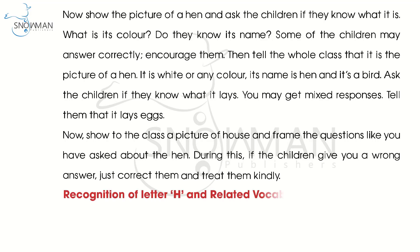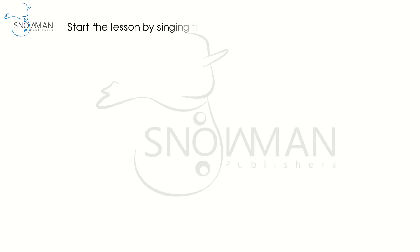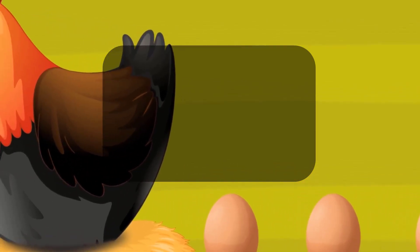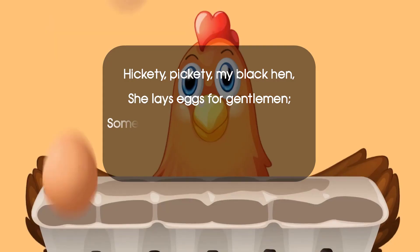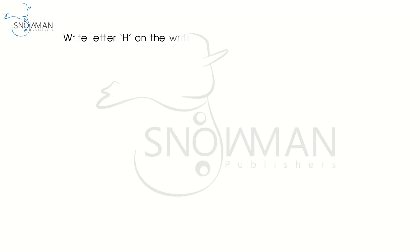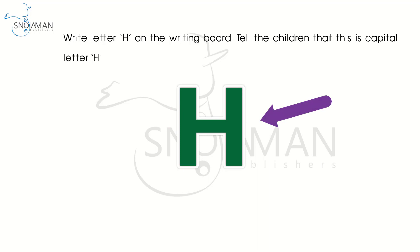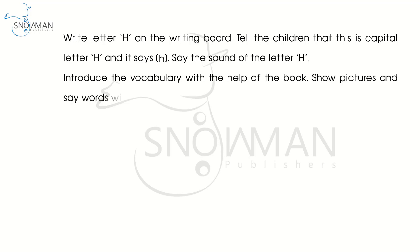Recognition of letter H and related vocabulary activity. Tell the children that today they will recognize letter H, learn its related vocabulary, and trace the capital letter H with correct formation. Start the lesson by singing the following song with the children. Write letter H on the writing board. Tell the children that this is capital letter H and it says H. Say the sound of the letter H. Introduce the vocabulary with the help of the book. Show pictures and say words with their initial sound: H.